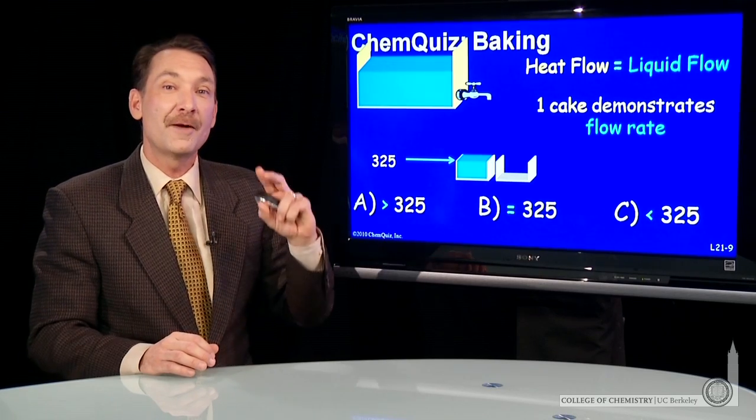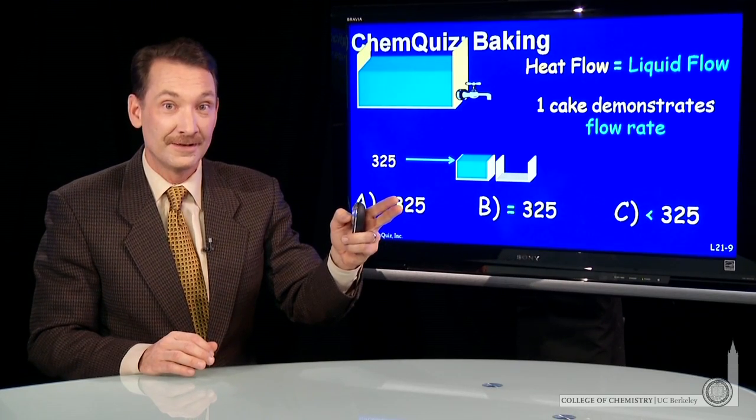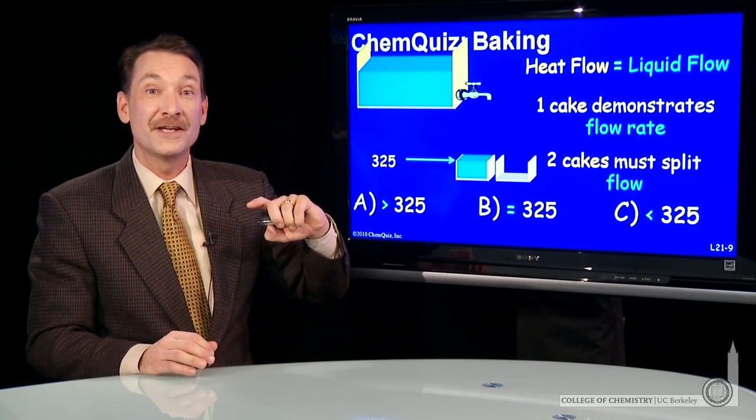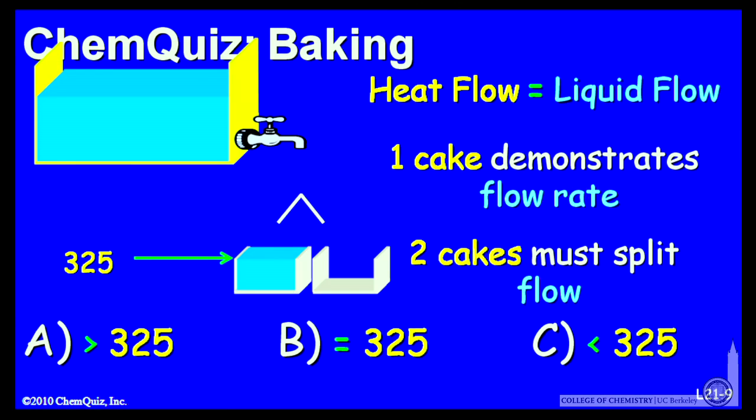So if I put two cakes in, now nothing has changed about the oven. It can still deliver heat at that same rate, but now it has two vessels to fill. So the heat flow has to be divided between both of the cakes. And what you'll find is, if the two cakes are equal, they'll come to about half the temperature in the same amount of time.